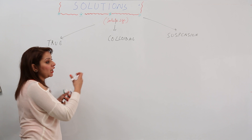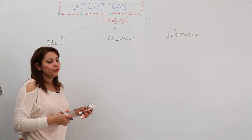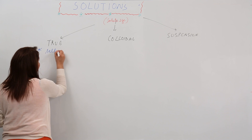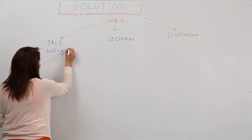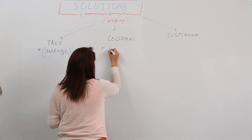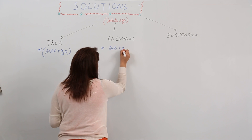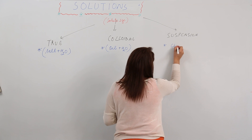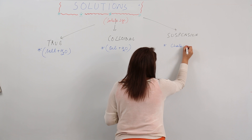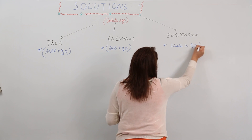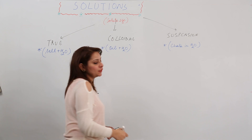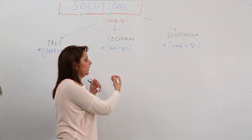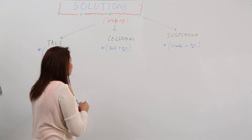The example of true solution is when we dissolve salt in water. The example for colloidal solution is oil and water. And the example for suspension is chalk in water. So we have these three examples, and now we'll consider what differences they have among themselves.